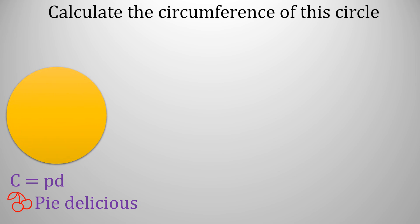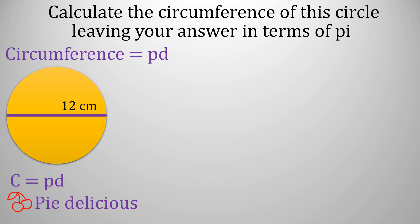Calculating the circumference in terms of pi. We need to know the formula: circumference equals pi times diameter. So it would normally be pi times 12, but to answer this question we need to write the...